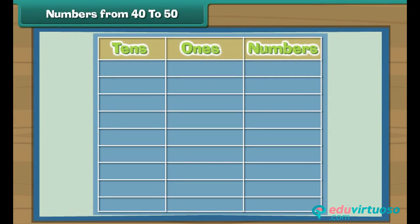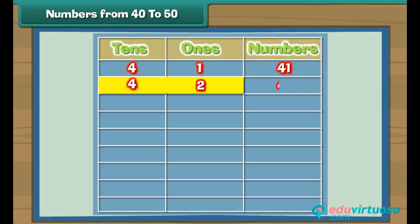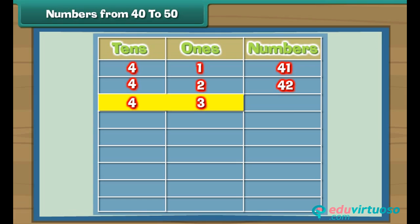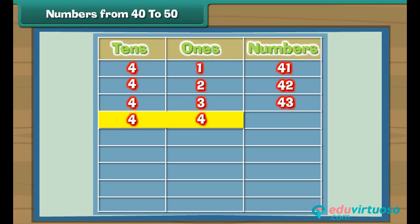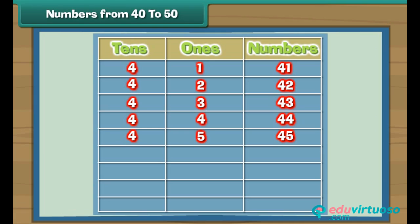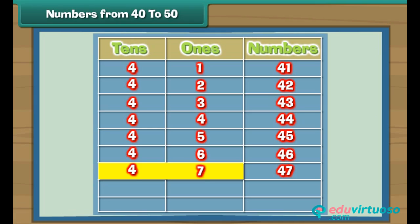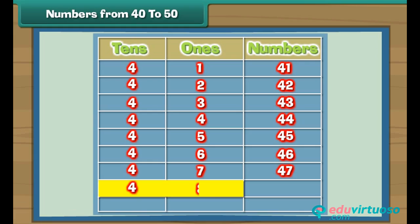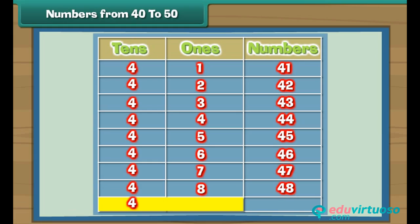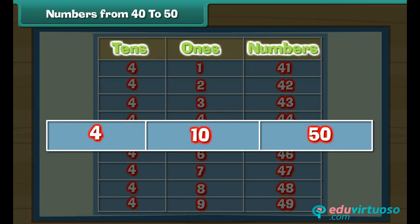Numbers from 40 to 50. Let us now complete this table. Four tens and one give 41, four tens and two give 42, four tens and three give 43, four tens and four give 44, four tens and five is 45, four tens and six is 46, four tens and seven is 47, four tens and eight is 48, four tens and nine is 49.